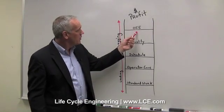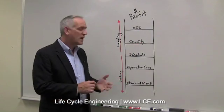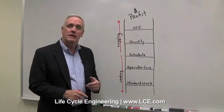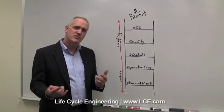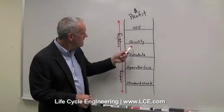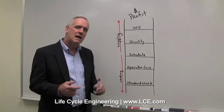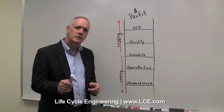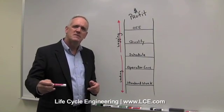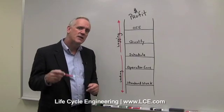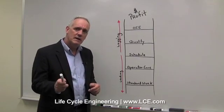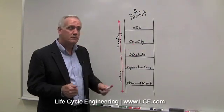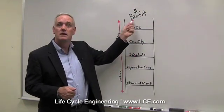A little more leading than OEE are things like quality — do I have scrap, do I have rework? Another leading indicator more leading than OEE might be availability or production rate. Even more leading is my schedule — am I meeting my schedule? Not just the production schedule, but am I meeting my maintenance schedule? Is maintenance doing the PMs on time, on schedule? If I can do my PMs on schedule, I can avoid problems. If I can avoid problems, I can have improved quality, improved availability, improved OEE, improved profit.